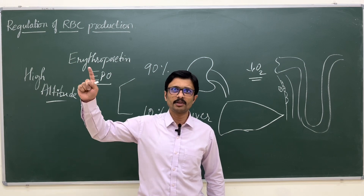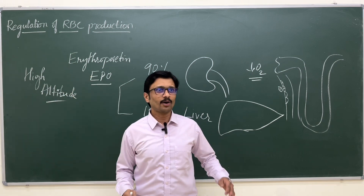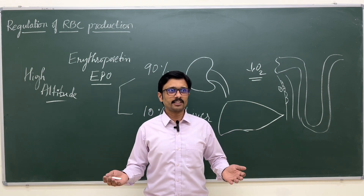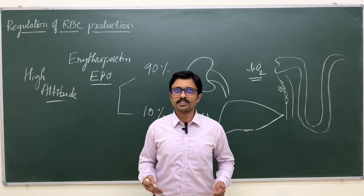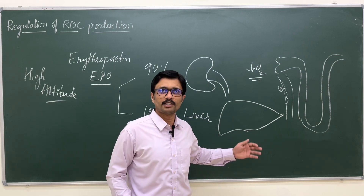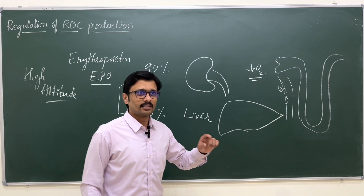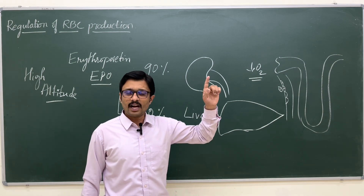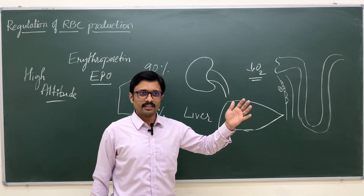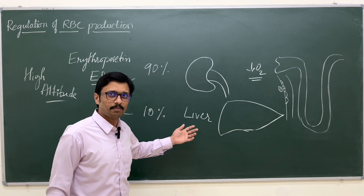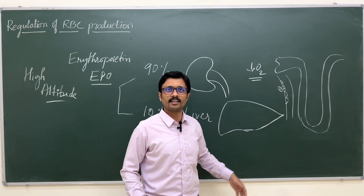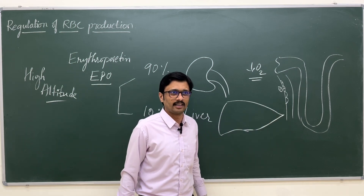The most important stimulus for erythropoietin secretion is decreased arterial oxygen content. This can happen when a subject is climbing to high altitude where the oxygen content in the atmosphere is very less. The subject breathes air with less oxygen, less oxygen is delivered to the tissues, and the tissues suffer hypoxia, which acts as a sensor and triggers erythropoietin secretion.